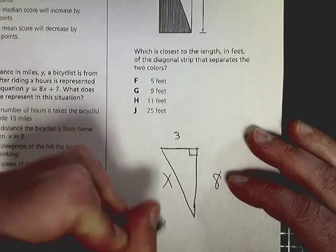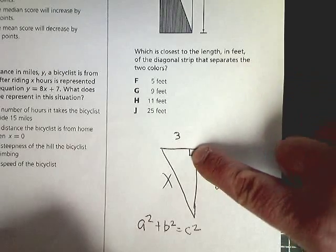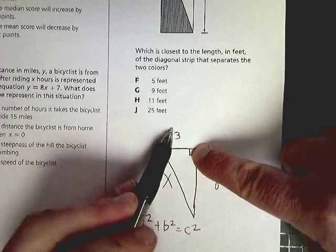So I'm going to write down a² + b² = c². Now I'm going to touch the right angle. That will help me identify what a and b are. That would be 3 and 8.